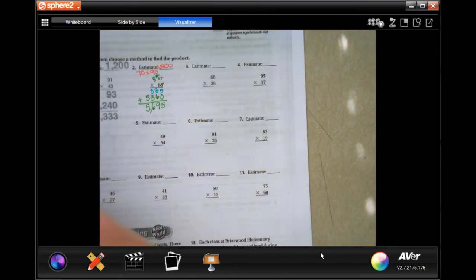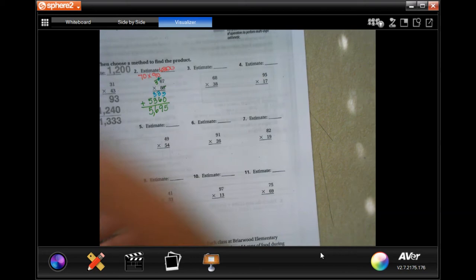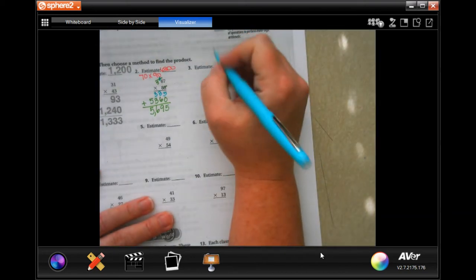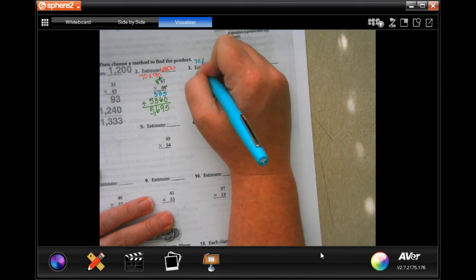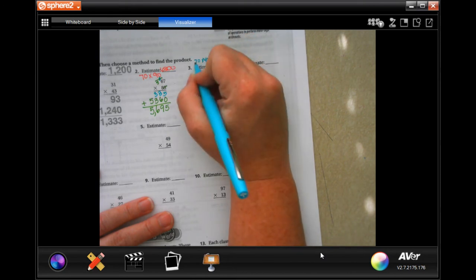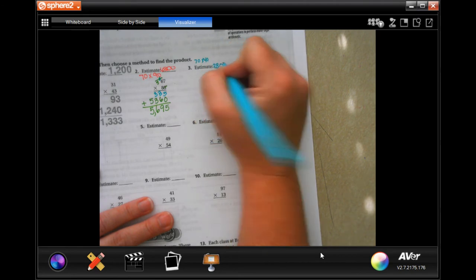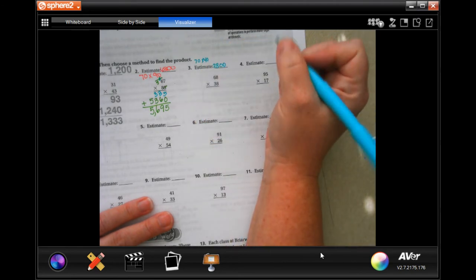So we're going to go ahead and do number three. Our estimate is going to be 70 times 40. Seven times four is 28, and then we're going to add on those two zeros. That's our estimate.